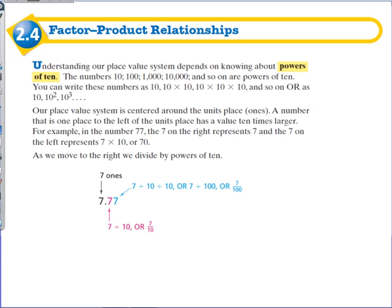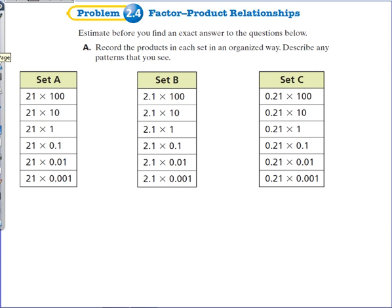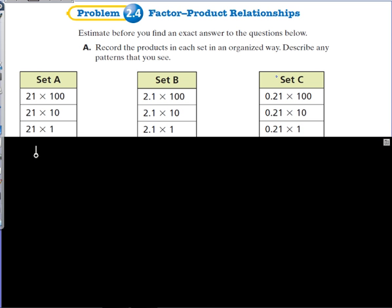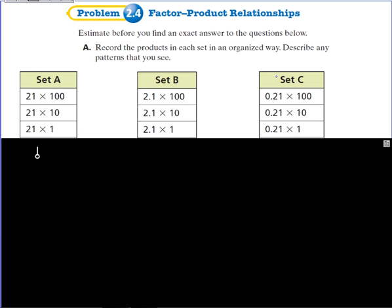So what we're going to do for our homework tonight is we're going to examine three sets of factors and how their products relate to the factors and to each other. For homework tonight, all we're going to ask you to do is do the first three of each set.